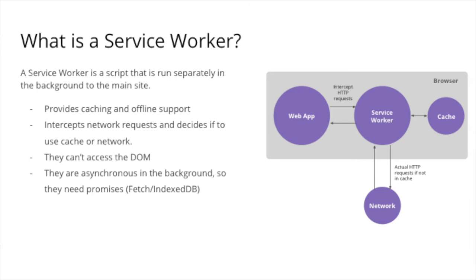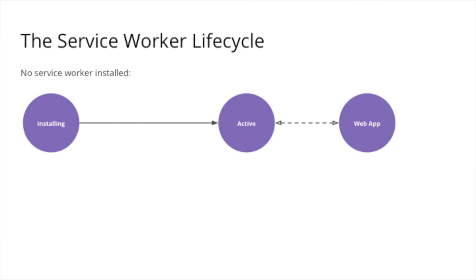One of the main parts of service workers is providing offline support. The service worker has the ability to intercept all your network requests from your web application and decide how to handle them — whether serving from a cache, going directly to the network, or something in between, depending on your network connectivity. Service workers have a slightly different lifecycle to how you view your web app inside a browser tab.